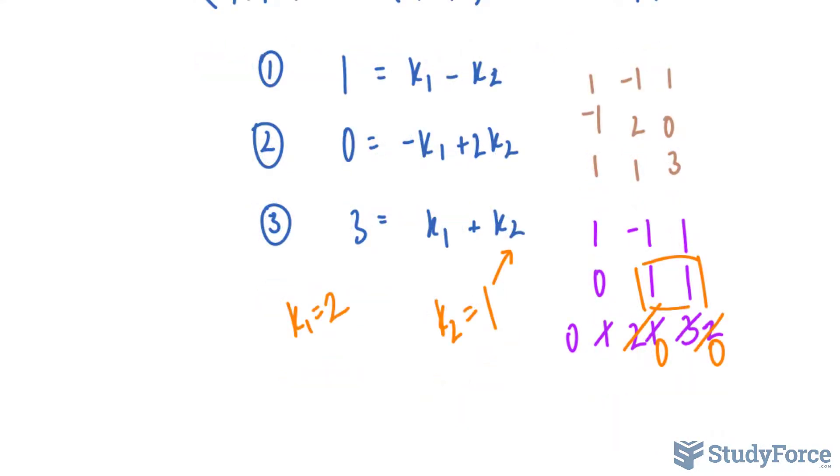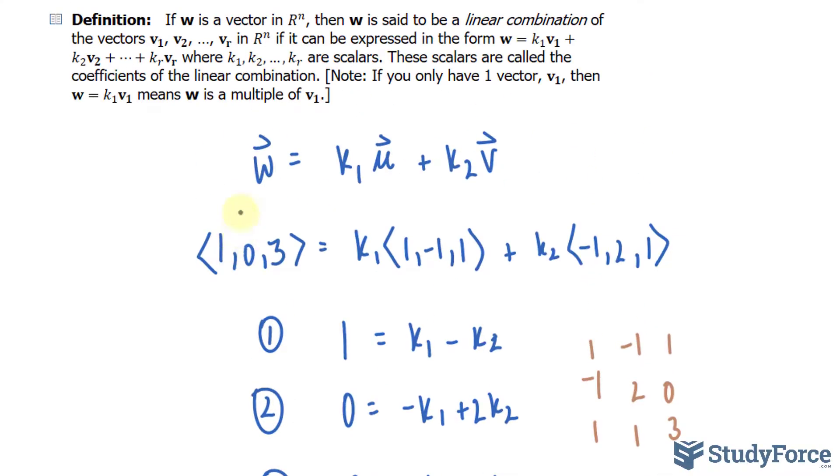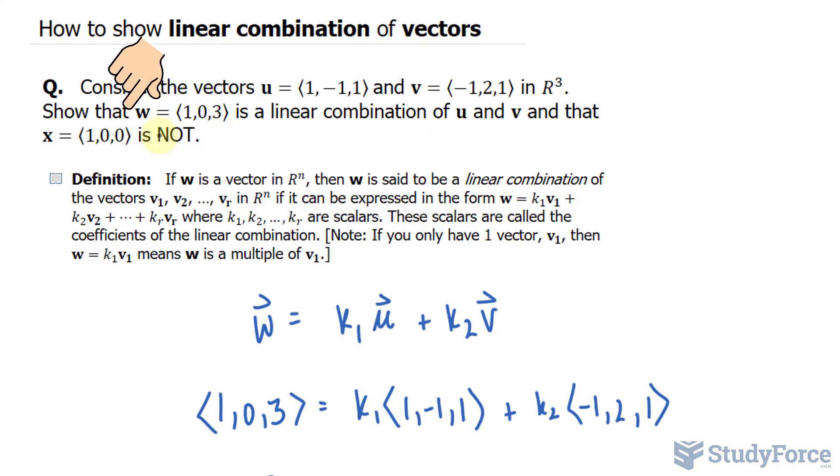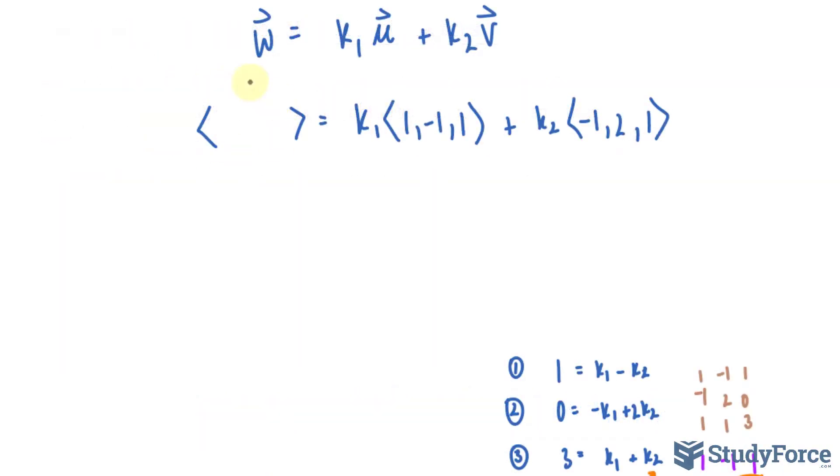Now we have to do this whole process over again for (1, 0, 0) to show that it's not a linear combination. So I'll put all of this work aside and rewrite this part as (1, 0, 0). Once again, forming a matrix, your matrix should look like this.